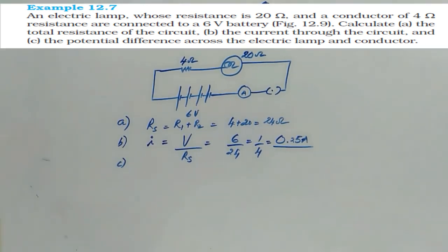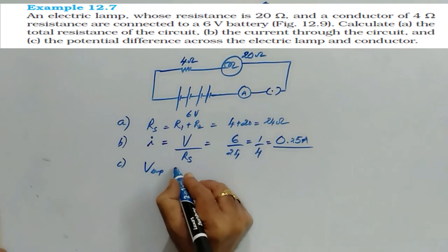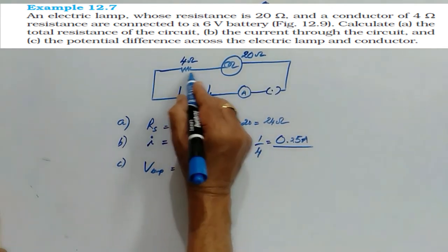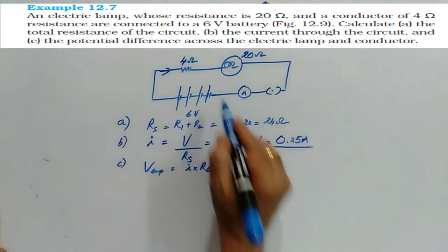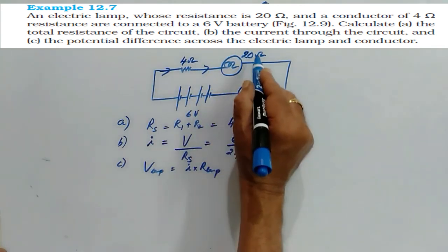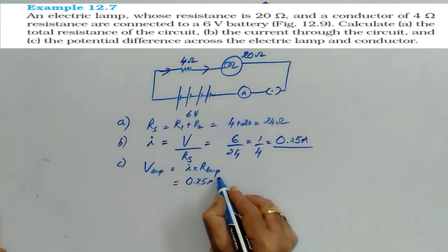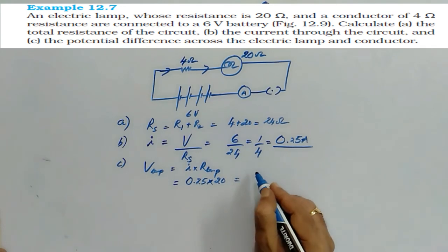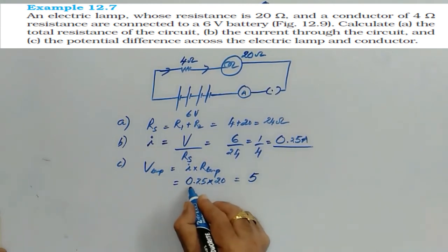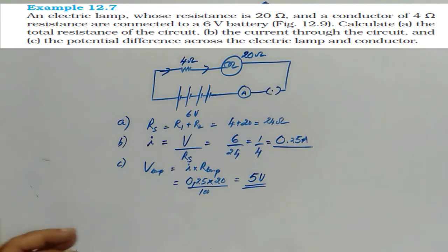Now another question is asked, the potential difference across the electric lamp. So potential across lamp must be equal to current times resistance of the lamp. As these two are connected in series, the current remains same. So if 0.25 current is passing through 4 ohms, there is no other go, therefore it has to pass through the lamp also. So I can take the current as 0.25, and the resistance is given as 20 ohm. Therefore you can calculate the potential difference across the lamp is, this you can make it as 25 by 100, so 5 volt.